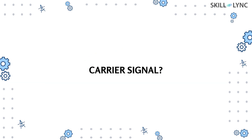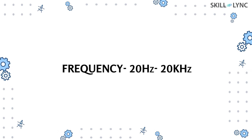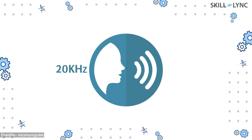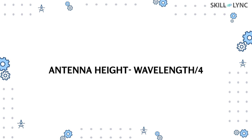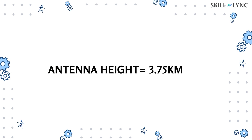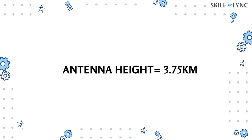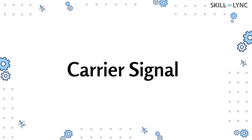Why exactly do you need a carrier signal? This is done for a number of reasons. The frequency of our voice signal is between 20 Hz to 20 kilohertz. If we transmit a signal of 20 kilohertz, its wavelength will be 15 kilometers. To send a message, the size of the antenna should be at least a quarter of the signal wavelength, making the antenna height equal to 3.75 kilometers — which is pretty impractical to design.